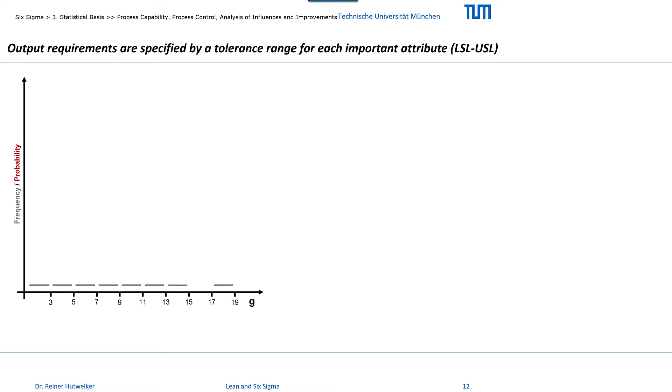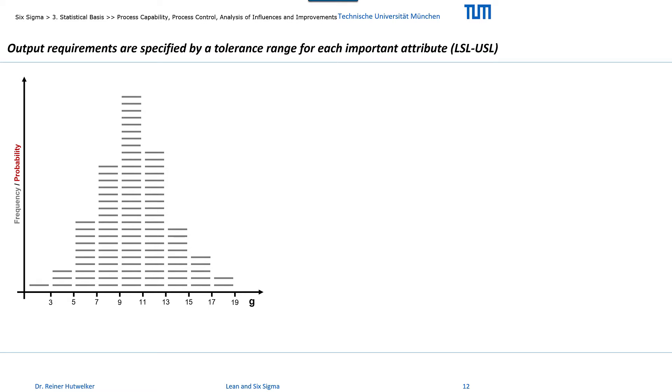To check how good we fulfill our promise we scaled each cookie and assigned it to one of different weight categories: 3 to 5, 5 to 7, 7 to 9 grams and so on by drawing a bar. Stacking the bars in the corresponding weight categories results in the displayed frequency distribution in the histogram.